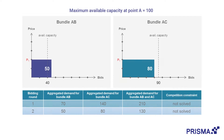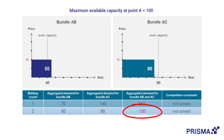In the second round, the aggregated demand for bundle AB is 50 and for bundle AC is 80. In a regular auction, the auction for bundle AC would now proceed with small price steps since it is an undersell. But because the competition constraint of 100 capacity is still exceeded when combining both auctions, the second largest price step is applied to both auctions.